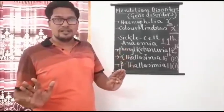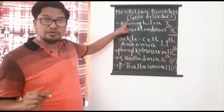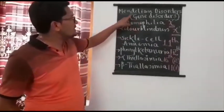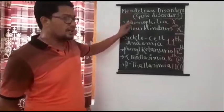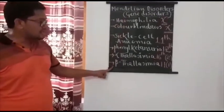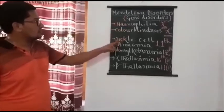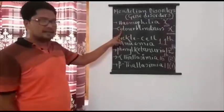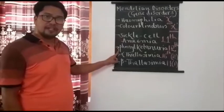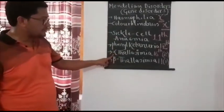Today I am going to concentrate purely on problems caused due to the presence of a single defective gene — gene disorders, otherwise called Mendelian disorders. In our second PUC syllabus, five gene disorders are given: hemophilia, color blindness, sickle cell anemia, phenylketonuria, and thalassemia — which is further classified into alpha thalassemia and beta thalassemia.